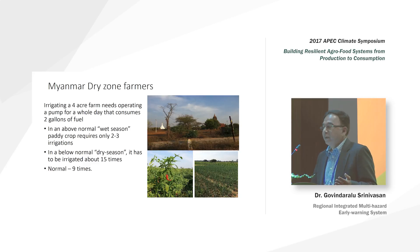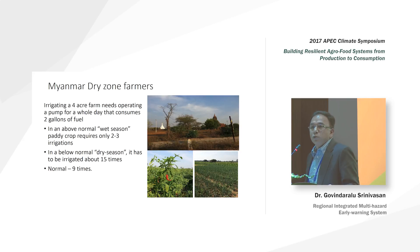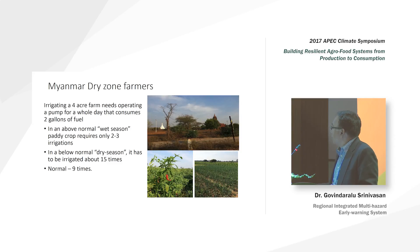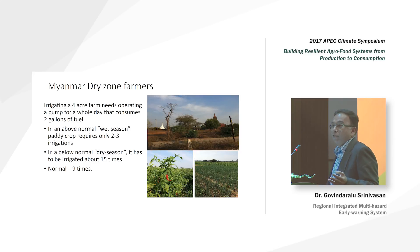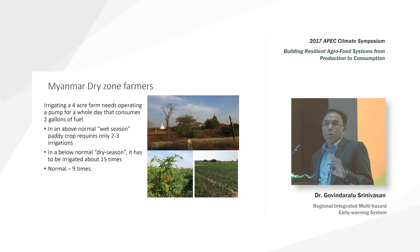The farmers themselves are very aware because it is their crop and their situation. It was surprising for us that they gave a very articulate answer. The farmer we talked to had about four acres of farm and said it needs pumping for a whole day, consuming two gallons of fuel to irrigate those four acres. In an above-normal wet season, a paddy crop will require only two to three irrigations. If you say below normal, he has to plan for at least 15 irrigations. In a normal season, only nine times.